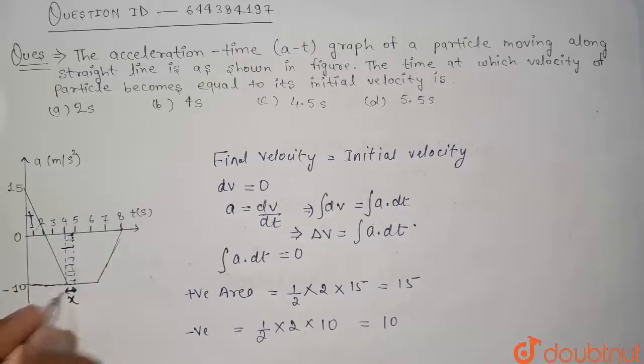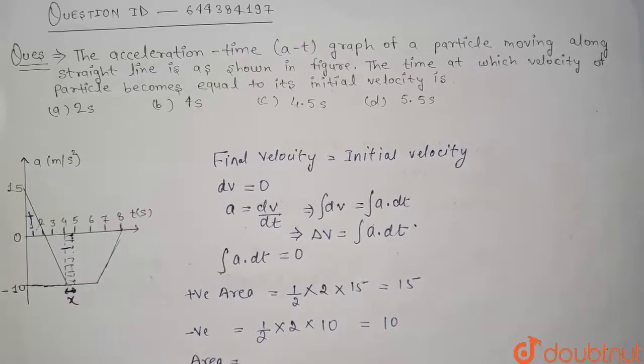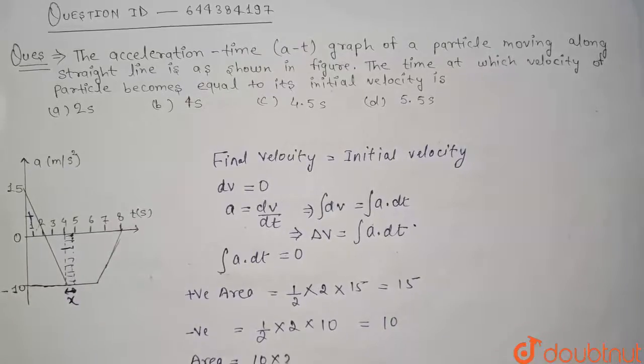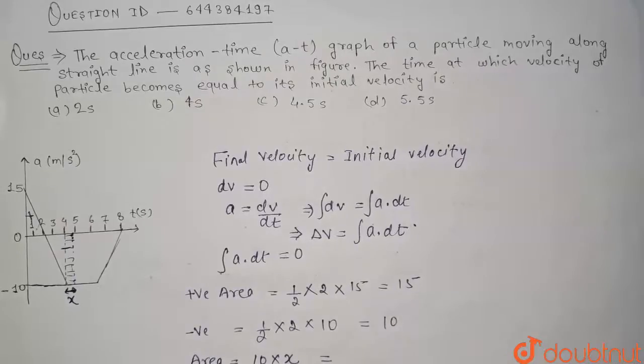Let us assume that this area, this width is x and length is 10. So area negative is 10 into x, and since this 10 into x should be equal to 5.